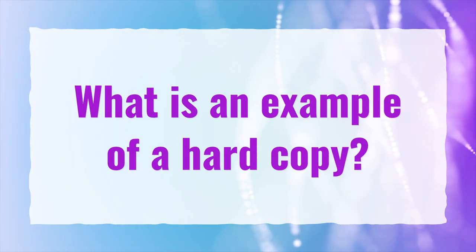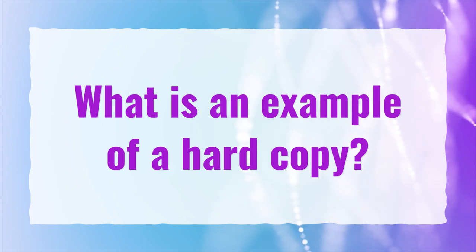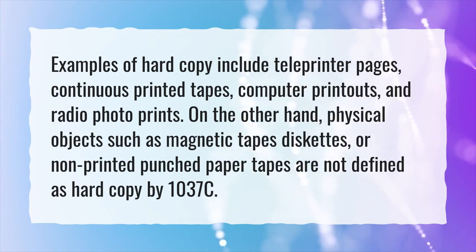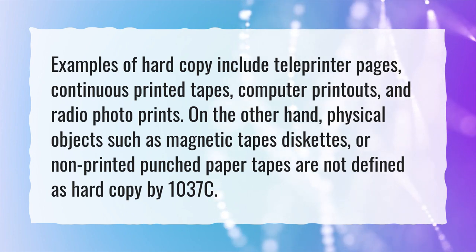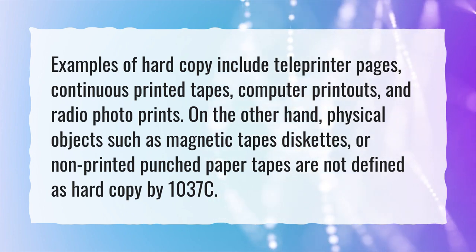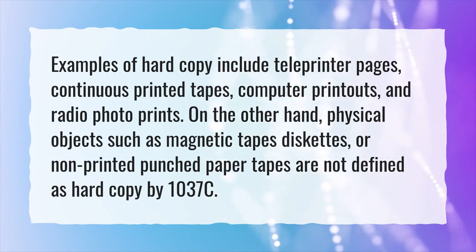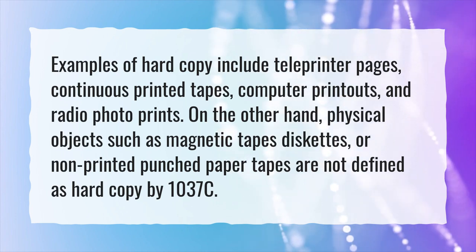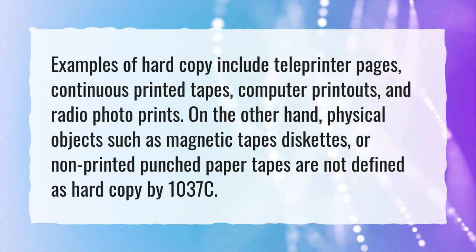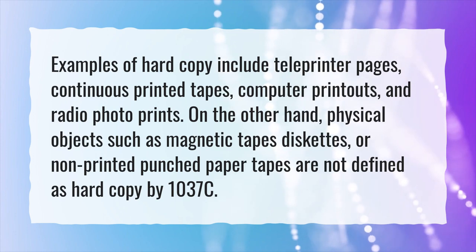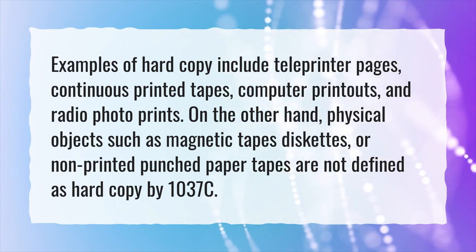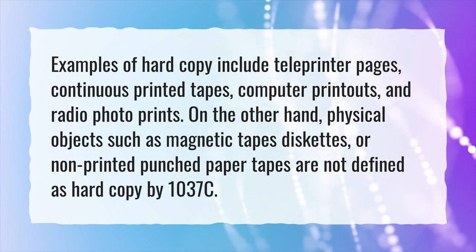What is an example of a hard copy? Examples of hard copy include teleprinter pages, continuous printed tapes, computer printouts, and radio photo prints. On the other hand, physical objects such as magnetic tapes, diskettes, or non-printed punched paper tapes are not defined as hard copy by 1037C.